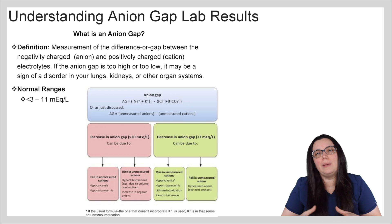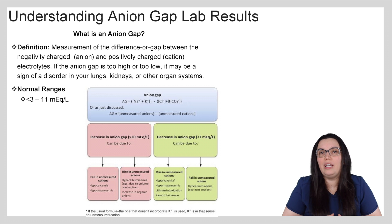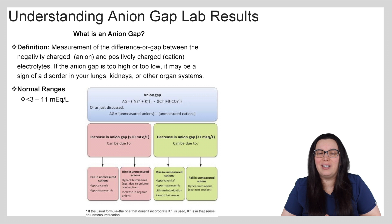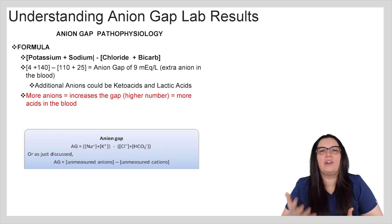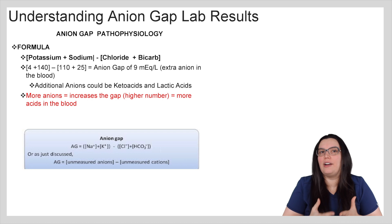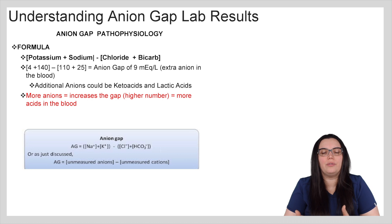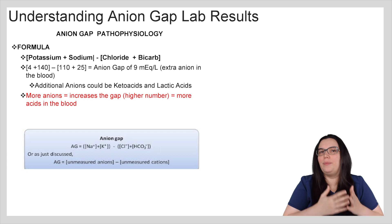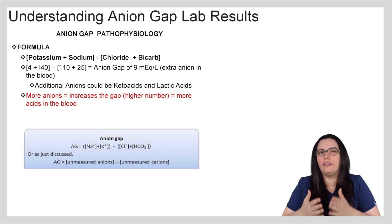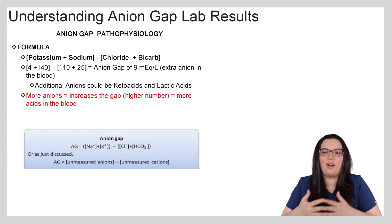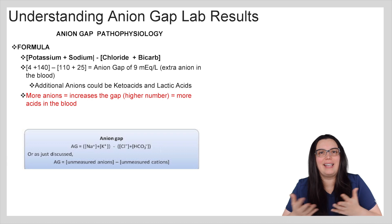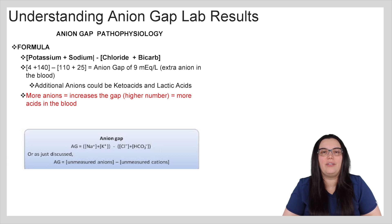We typically like to have our anion gap between 3 to 11 milliequivalents per liter. When we're trying to figure out how we get our anion gap, this is the formula that we use. What we do is we add our potassium and our sodium together, and then we add our chloride and our bicarb together, and that is how we get that value.